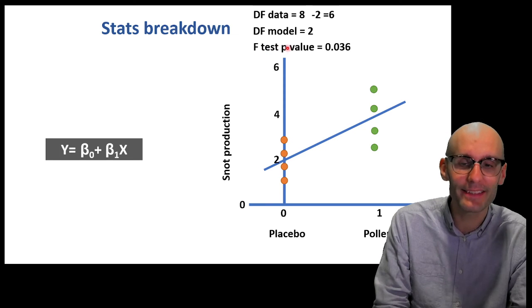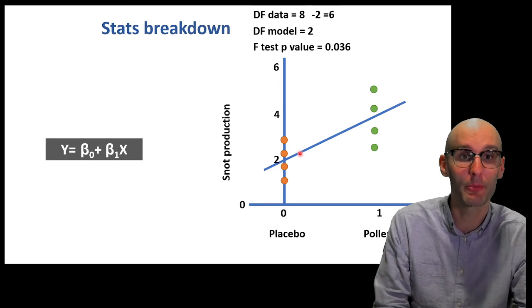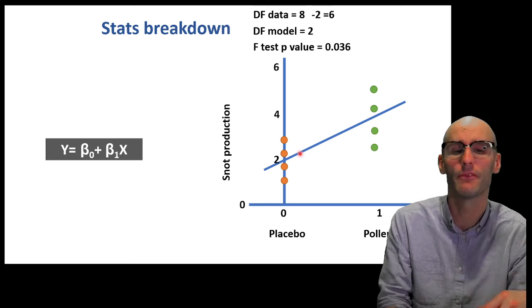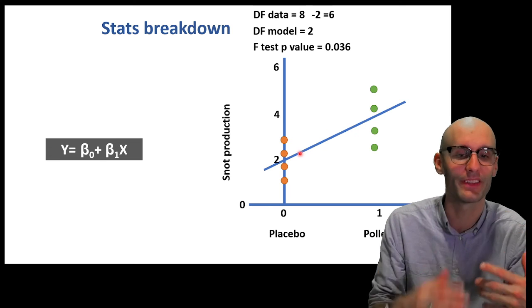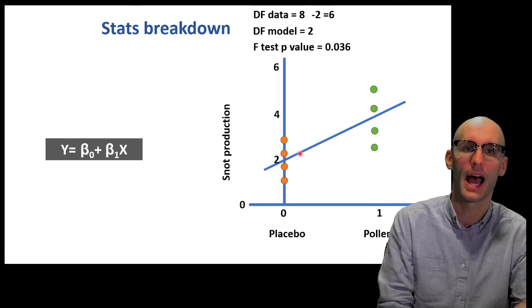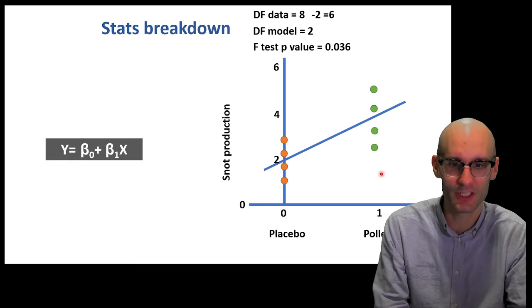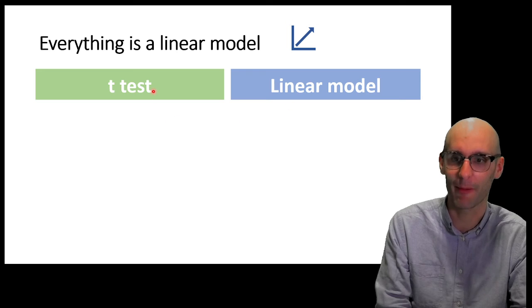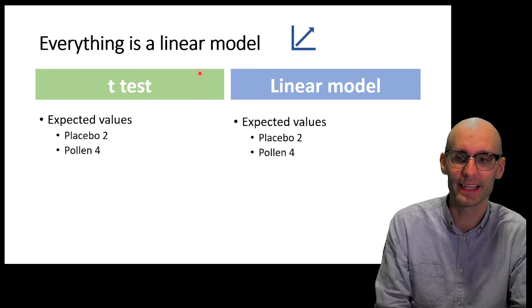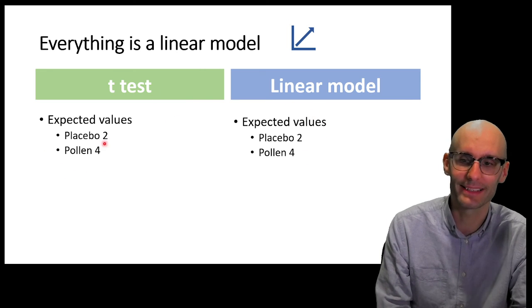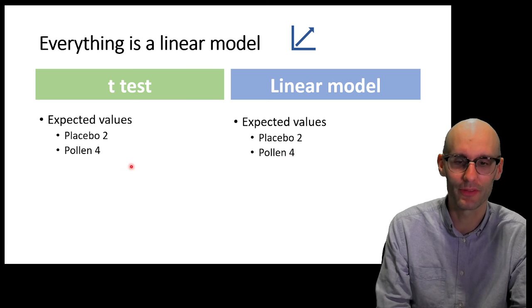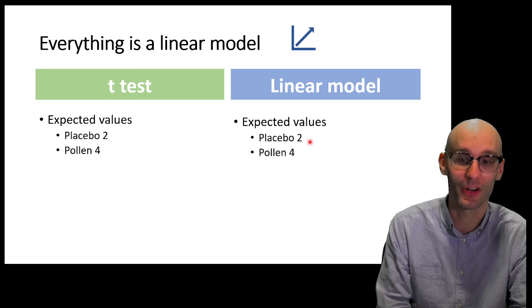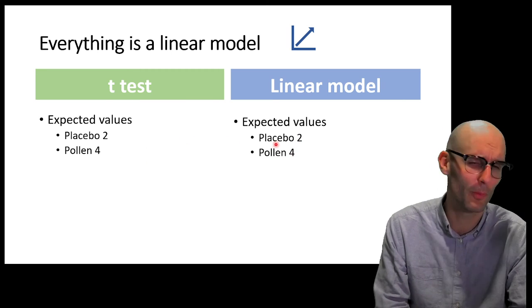So we've used up 2 degrees of freedom in our model. So the degrees of freedom goes back down to 6. There's only 6 ways that that data could vary, given this linear regression. And then we run an F-test of this linear regression. Remember, an F-test looks at explained versus unexplained variation, looks at that ratio of unexplained versus explained variation there. And we get this p-value, which is exactly the same. So if we break that down, T-test, expected values, we get the exact same. The placebo 2, the pollen 2, sorry, the placebo 2, placebo 2, pollen 4, pollen 4.